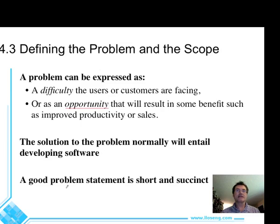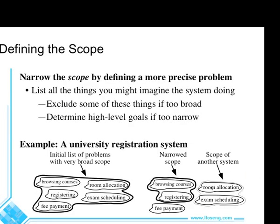The idea is to create a problem statement that is short and succinct — for example, 'improving the university system to allow students greater satisfaction.' We also have to define the scope of the software and make sure the software isn't trying to do too many things, at least initially. We could start with a very large scope: browsing courses, allocating rooms, registering, scheduling exams, fee payment, etc. — and then later realize that this is too broad.